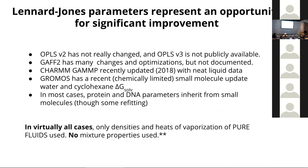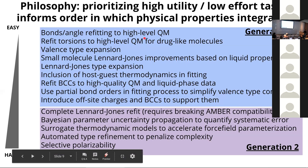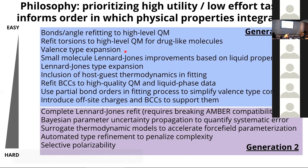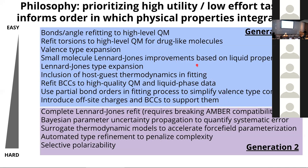Our attempt to figure out what gives us the biggest win first: we think there are very big improvements from using Lennard-Jones liquid data that informs improvement of Lennard-Jones parameters, then getting into host-guest thermodynamics, and later possibly reparameterizing everything for our initial sprint for small molecules. For this sprint, we're trying to keep compatibility with the Lennard-Jones parameters of biopolymers without having to change those, and there's discussion about how best to preserve compatibility with protein parameters from Amber.